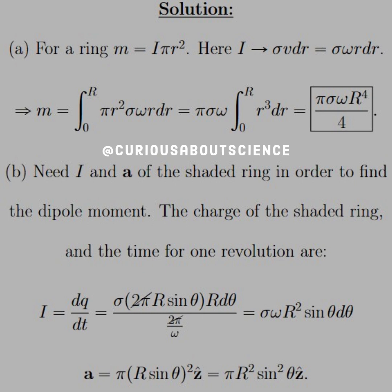Now, for the fun one, what we need is I and A of the shaded ring from the diagram in order to find the dipole moment of the ring. And then from the ring, what we can do is find the total dipole of the whole thing by integrating it out.